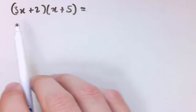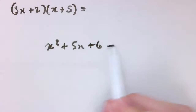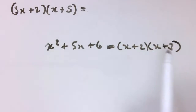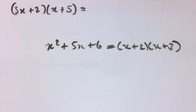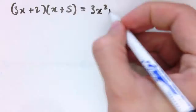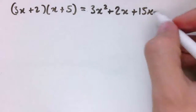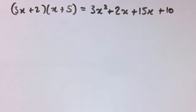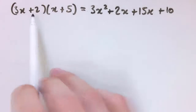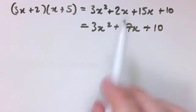In a previous video we looked at multiplying out and factorising quadratics like x squared plus 5x plus 6, where the answer was x plus 2 times x plus 3. Here I want to look at ones that are a bit more complicated, where rather than just having a single x inside the bracket we've got a 3x. If I multiply it out I get 3x squared, then plus 2x, plus 15x, and plus 10 — so that's 3x squared plus 17x plus 10.